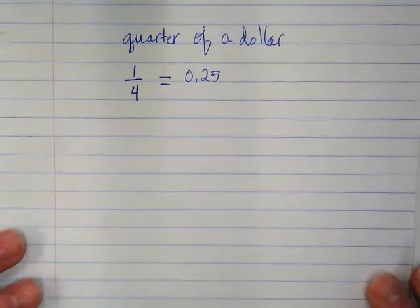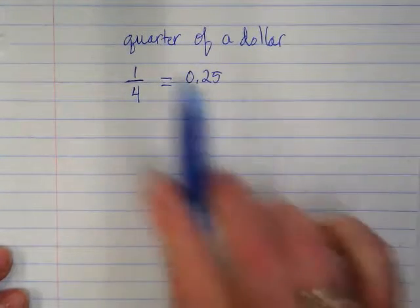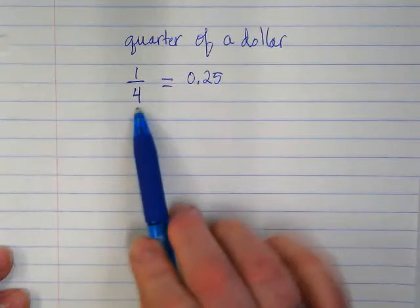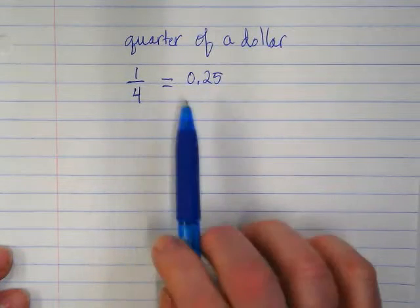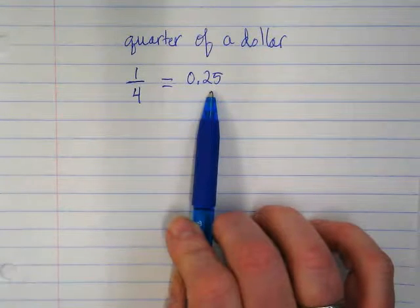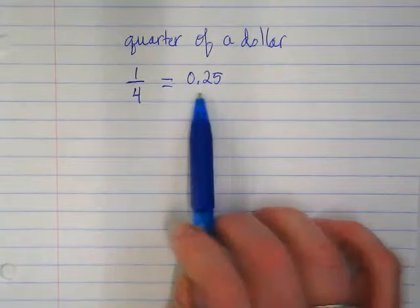0.25. Twenty-five cents is a quarter of a dollar. It takes four quarters to make a dollar. It takes four one fourths to make one whole. Well I just wrote this down because it's a fact I know and many of you probably knew it too.